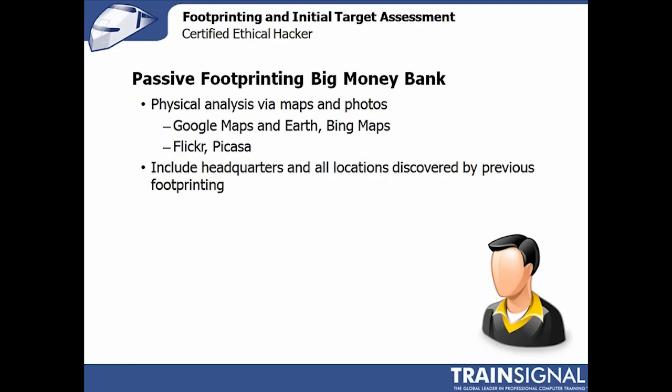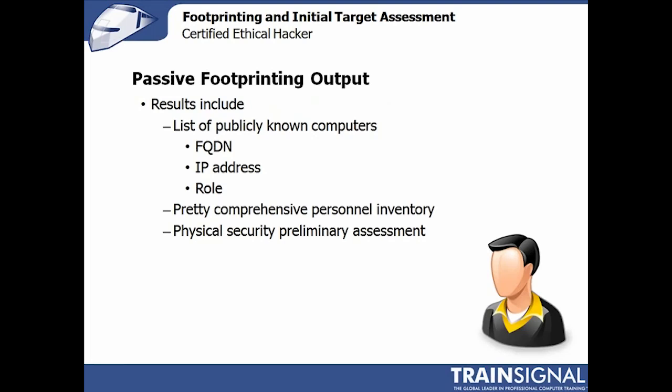Big Money Bank may also physically share locations — for example, a branch in a mall with common walls or shared boundaries. You can look up what company or store is next door to a branch entirely on Google or Bing without driving anywhere. All of this can be done in complete secrecy, without touching the company itself, remaining entirely within the passive scope.